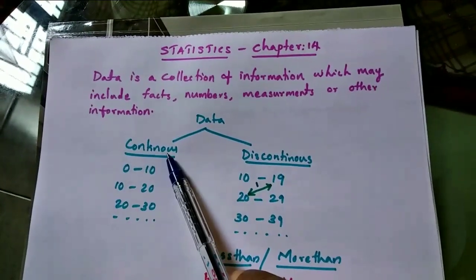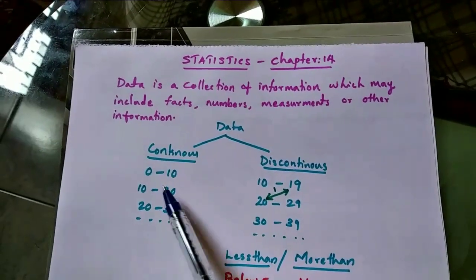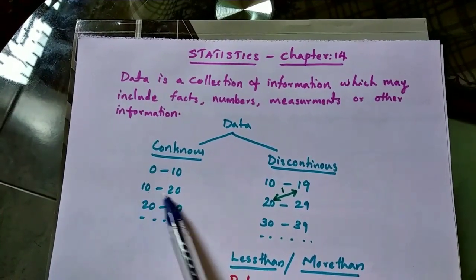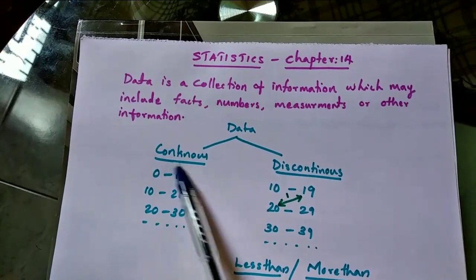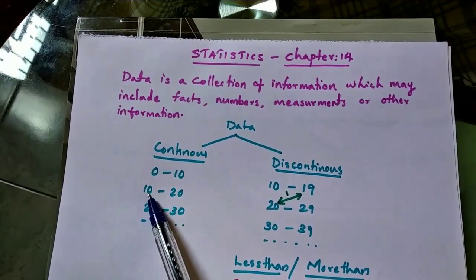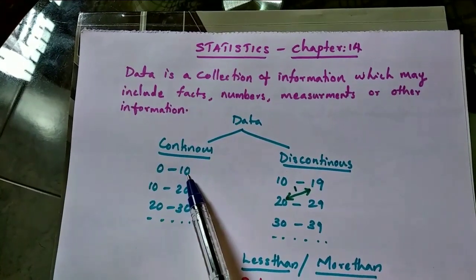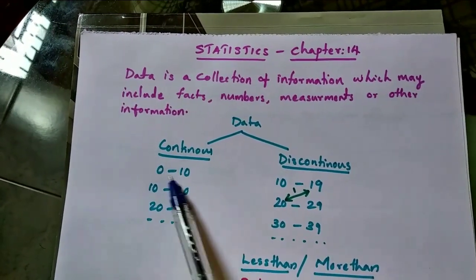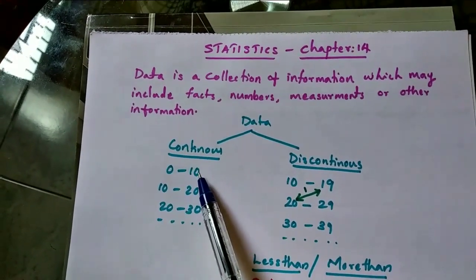into two types: one is continuous data and the second is discontinuous data. For continuous data, here's an example: 0 to 10, 10 to 20, 20 to 30. See, this is the first class interval. This is called the lower limit and this is the upper limit. The width of this class interval is 10.